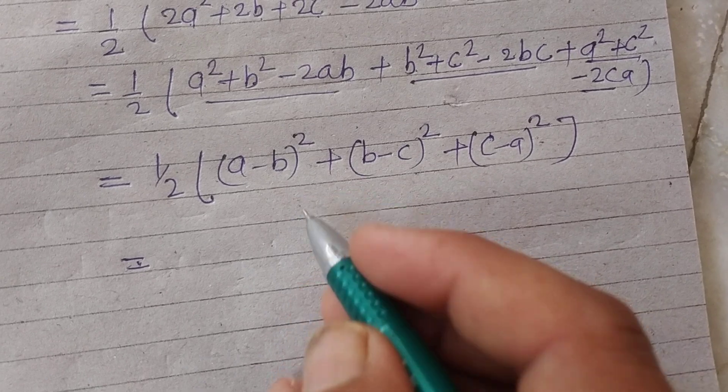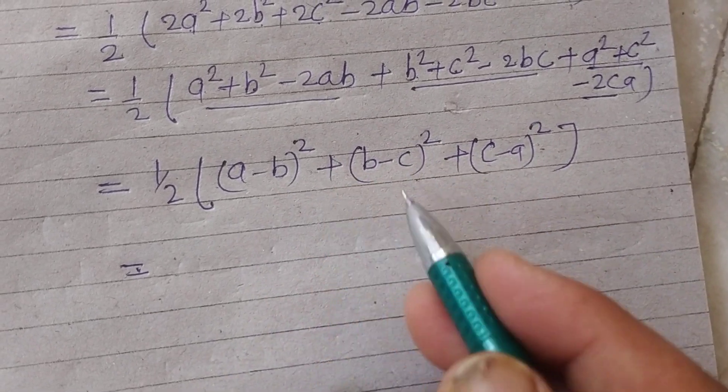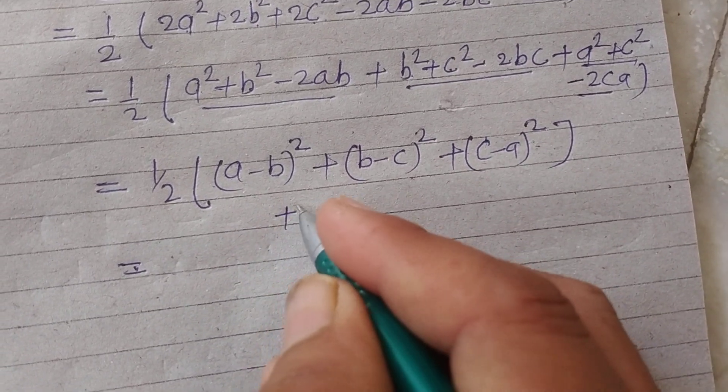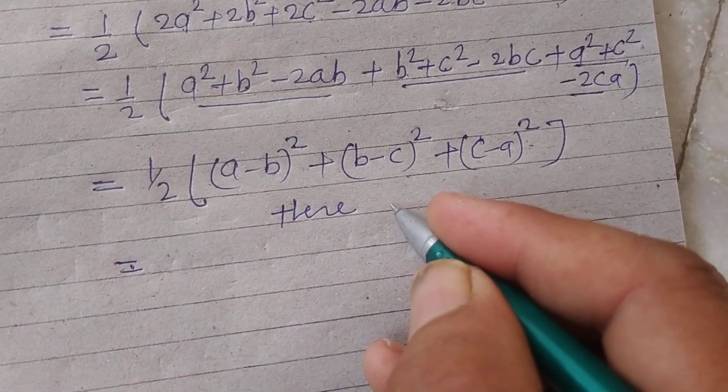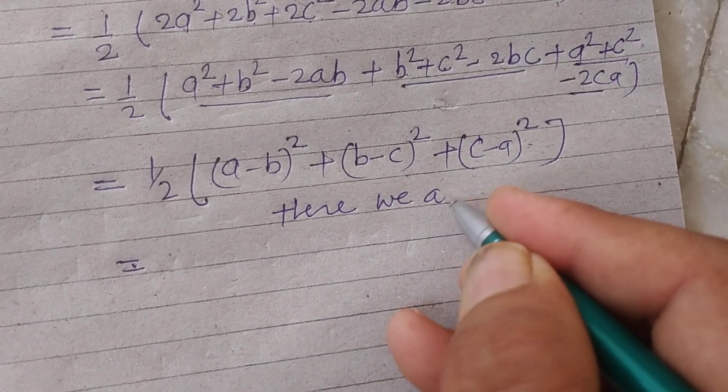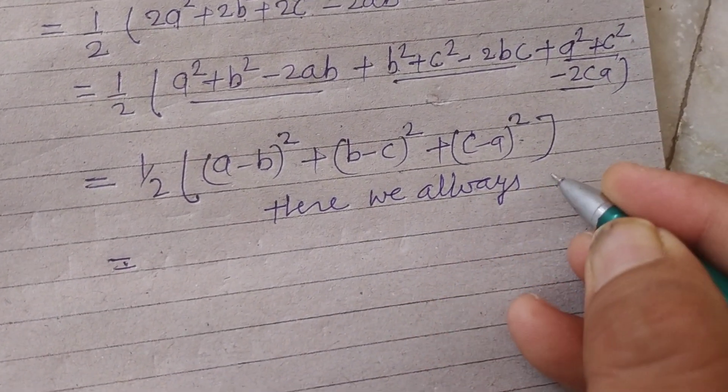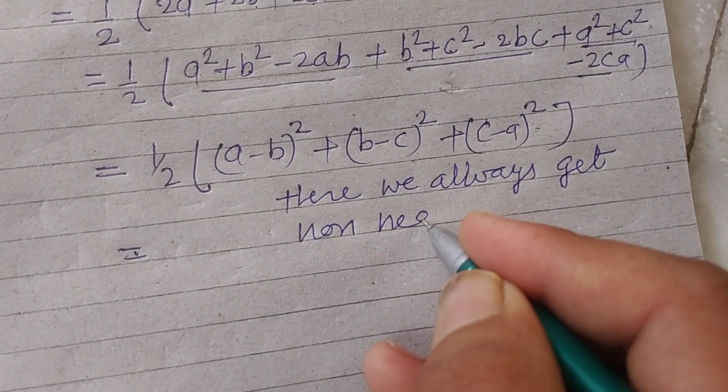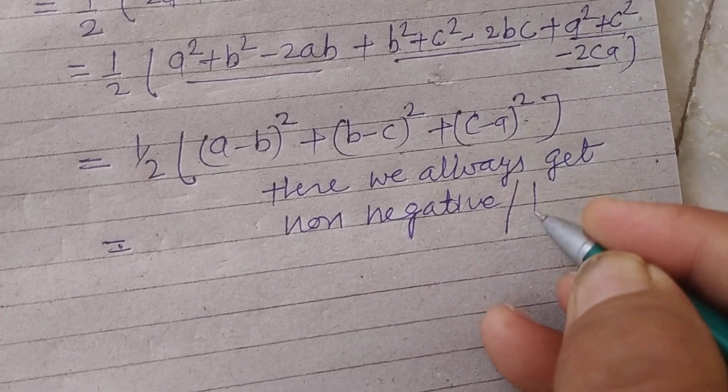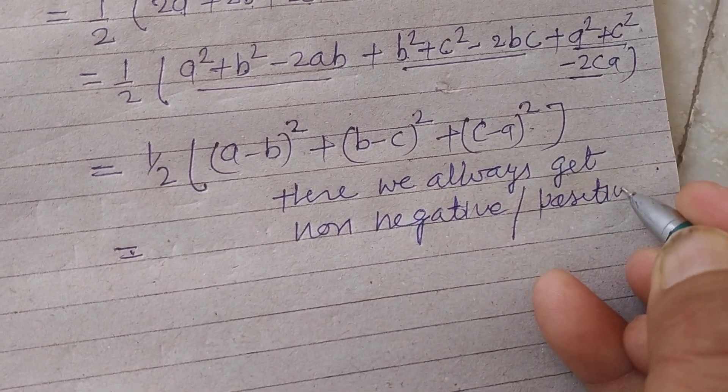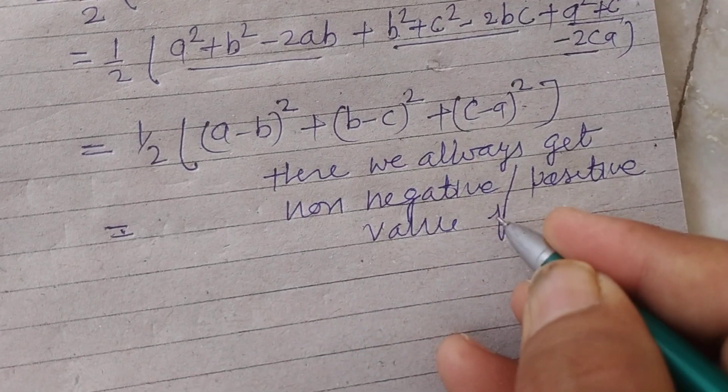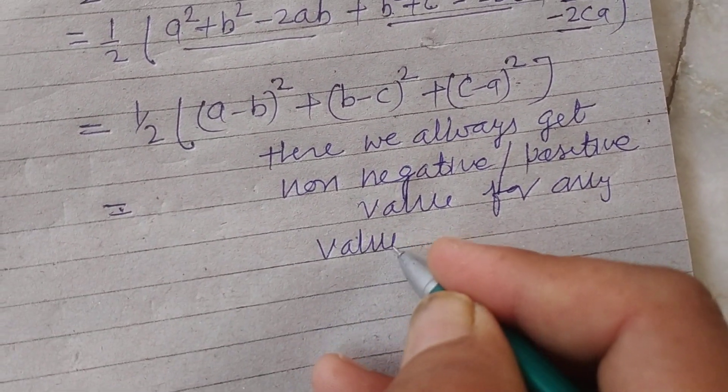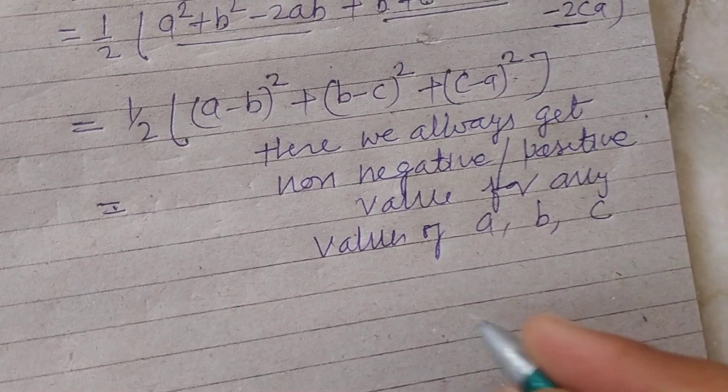So when you put the value of a, b, c in this, because this is whole square, so we always get here non-negative or positive value for any values of a, b, c.